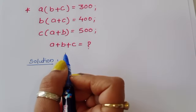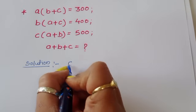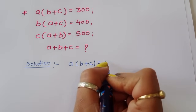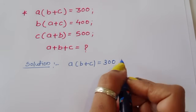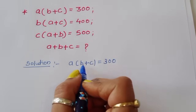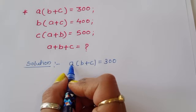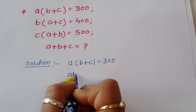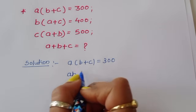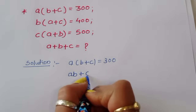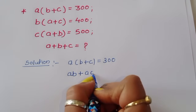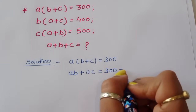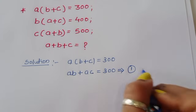Solution. First, A times (B plus C) is equal to 300. We can expand this by multiplying the term, so AB plus AC is equal to 300. We are giving this equation number 1.